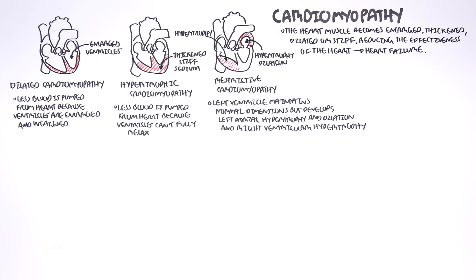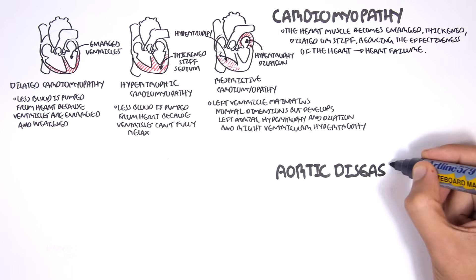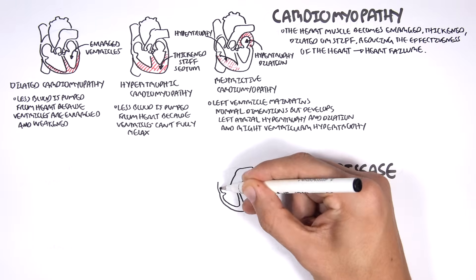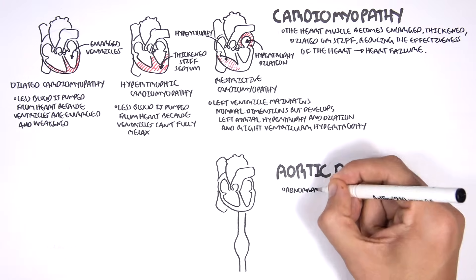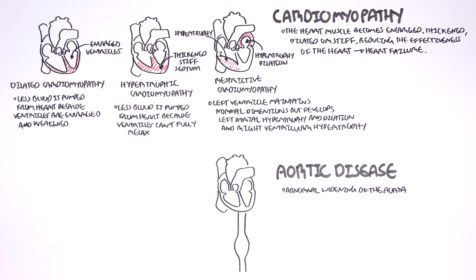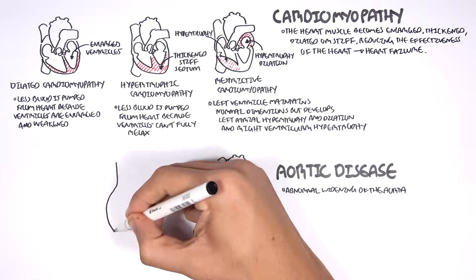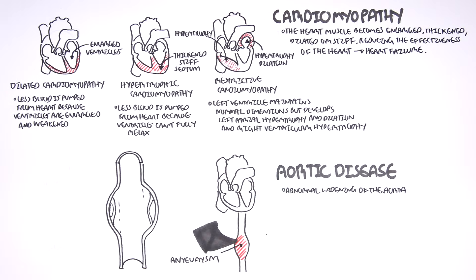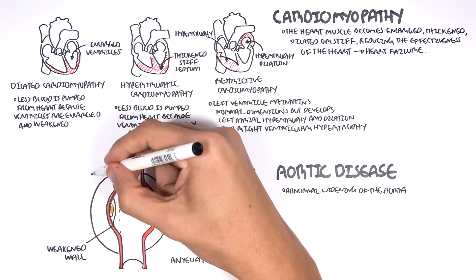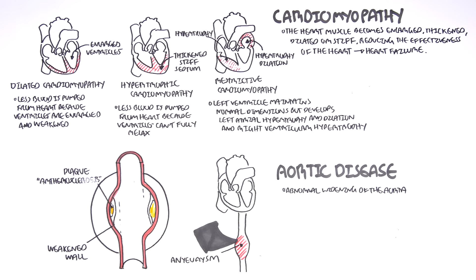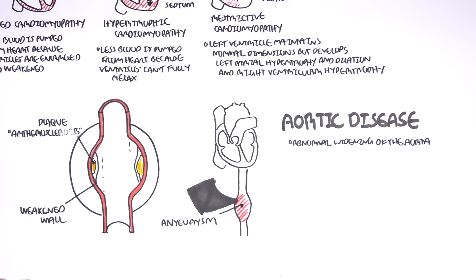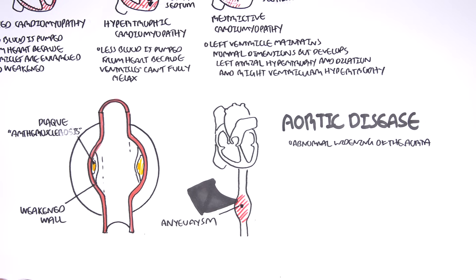The next cardiovascular disease involves the aorta, classified as aortic disease. An example is an abnormal widening of the aorta, known as an aortic aneurysm — specifically abdominal aortic aneurysm. This results in a weakened aortic wall and plaque formation. The aortic aneurysm can result in thrombosis and then embolism, which can lodge into vessels leading to serious problems downstream.